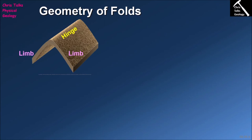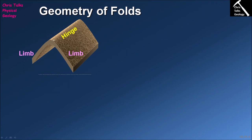Now let's think about the geometry of folds. Looking at this simplified anticline diagram, there are commonly used terms. The hinge is the region that has undergone the highest degree of deformation — this is where the layer actually flexes to allow the fold to form. Either side of the hinge we have the limbs, which are relatively planar and flat. The vast majority of deformation is focused in the hinge region, while the limbs remain relatively undeformed.